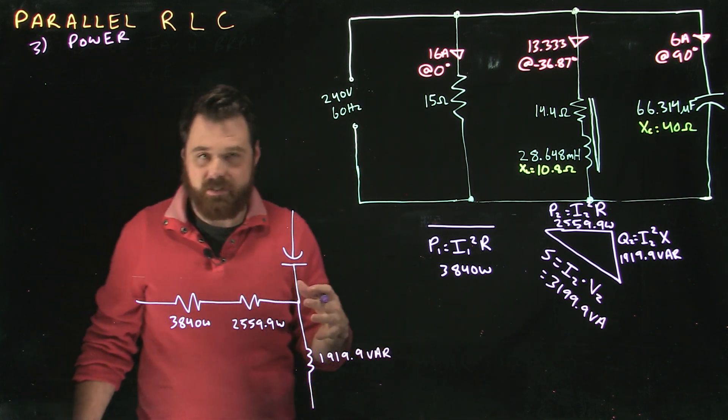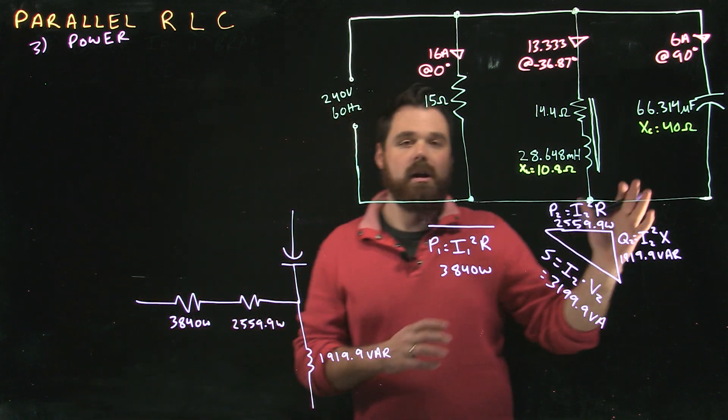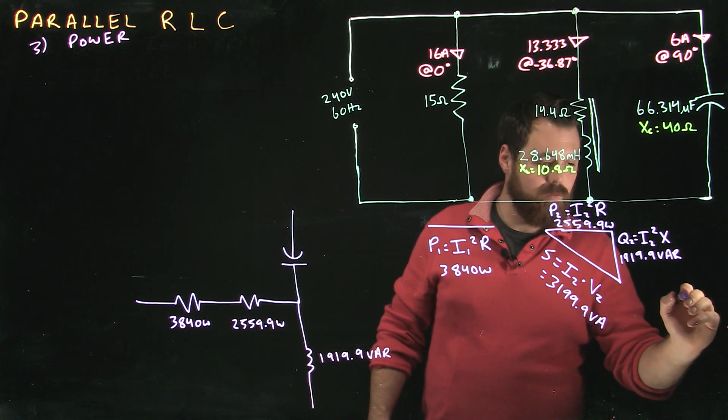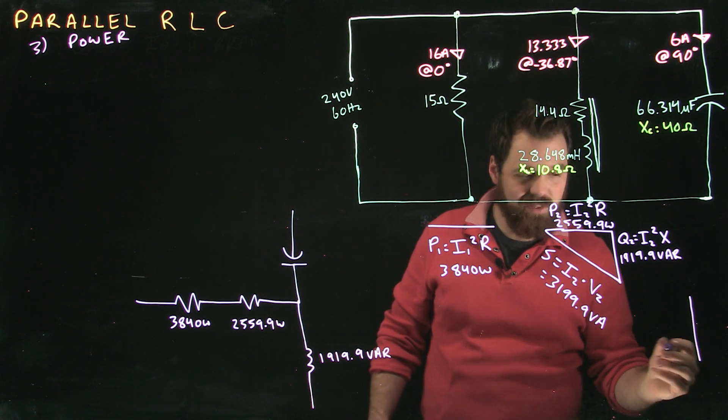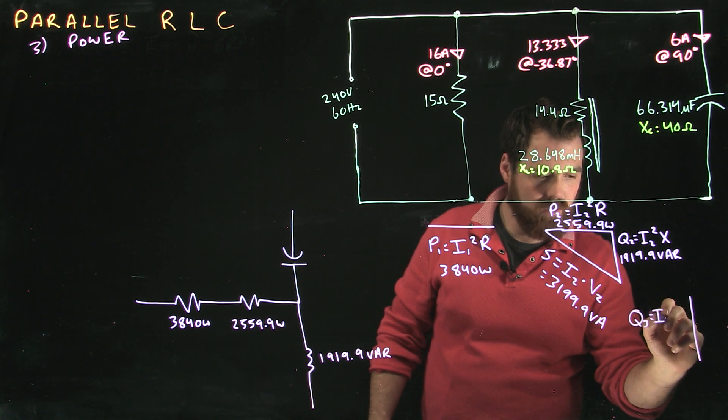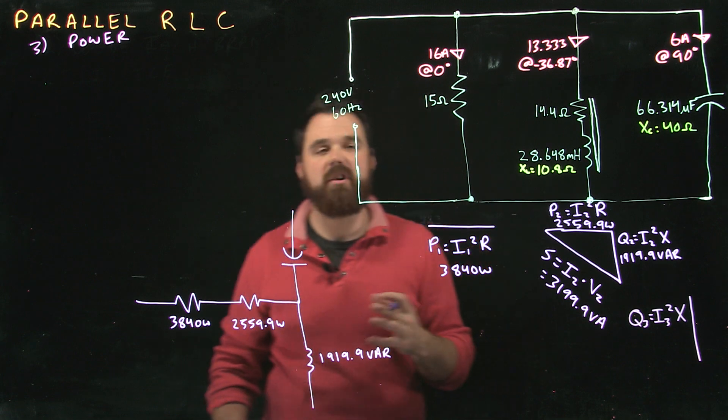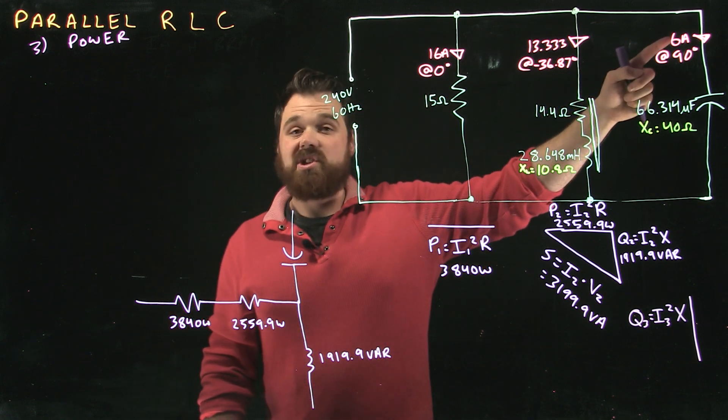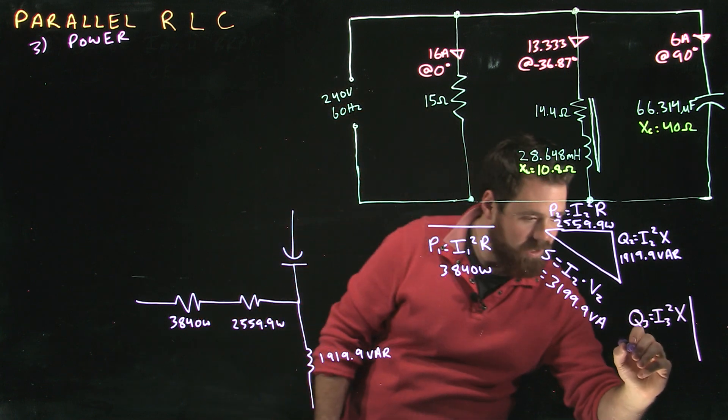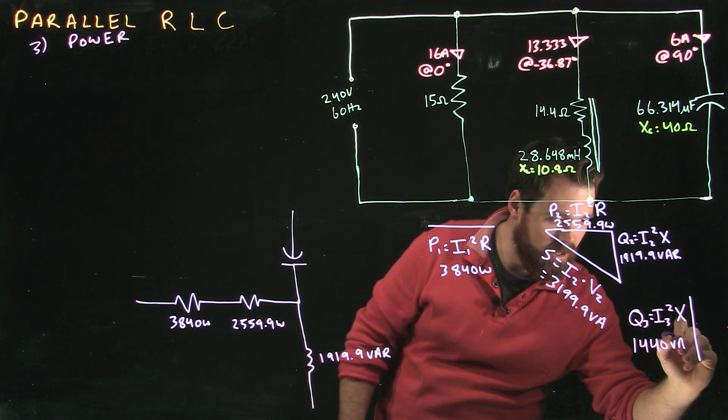Now my last step is the power in the third branch across my capacitor. Because it's a purely reactive circuit, I know I'm looking at only Vars. In this case, I'm going to go Q3 equals I3 squared times the X in that branch. 6 amps squared times 40 ohms gives me 1440 VAR.